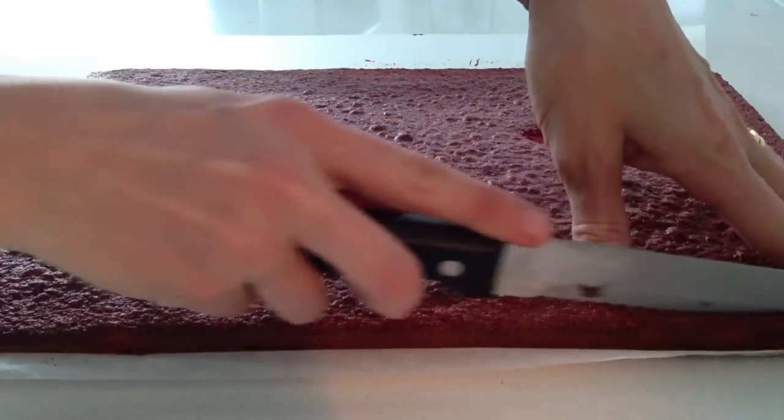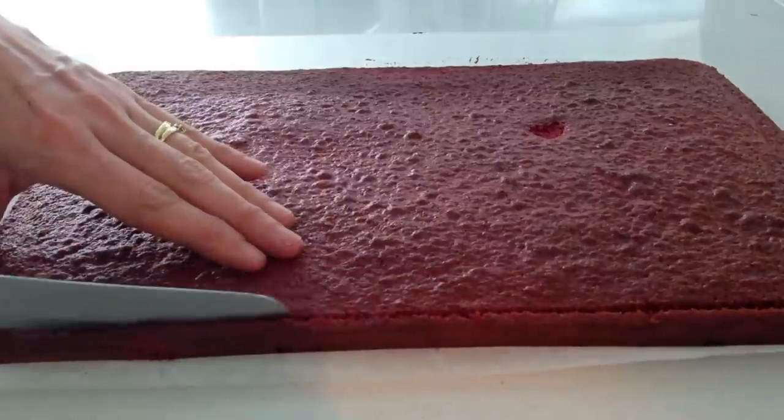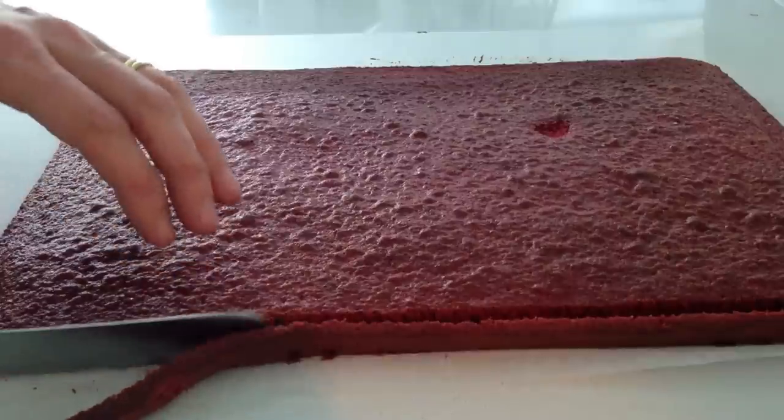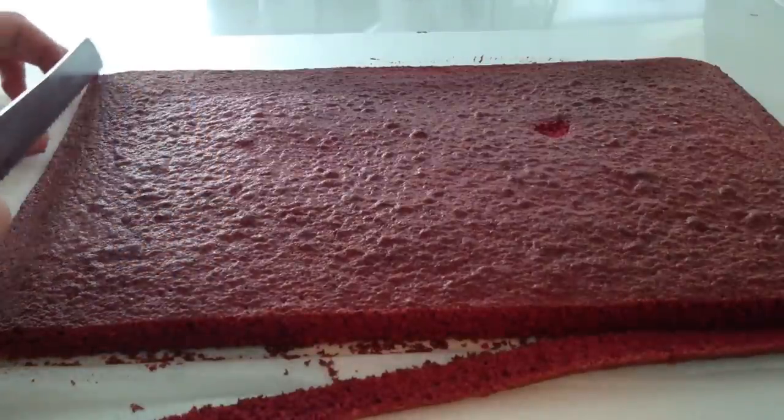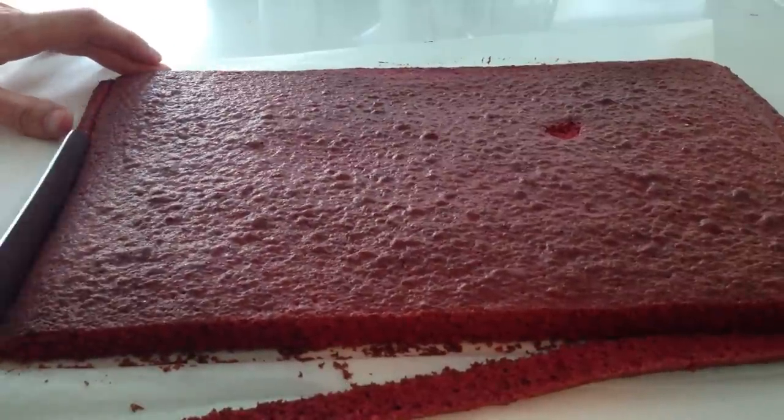For the pillow cake itself, bake four quantities of my red velvet cupcake recipe in a tray and then let them cool. Trim off the edges and then make yourself a square template that you can use. Mine was 23cm by 23cm.